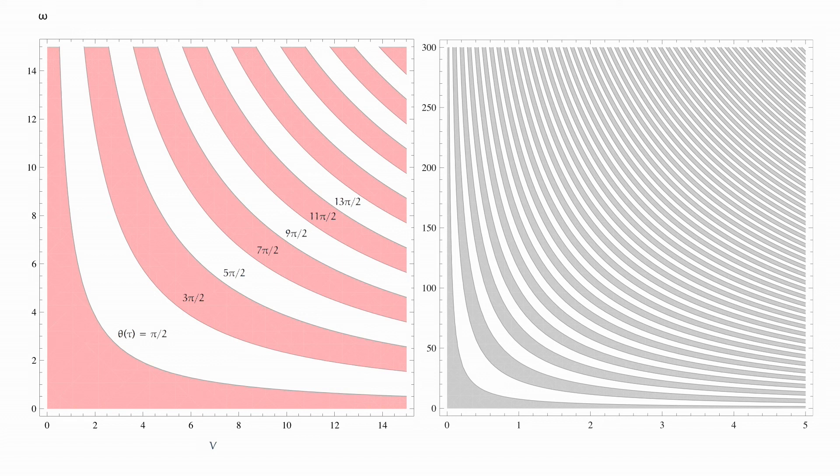And the region of interest to us, the region where typical coin tosses reside, are velocities between 2 and 3 meters per second, and angular velocities between 225 and 250 radians per second, as shown in that narrow band in your figure on the right.